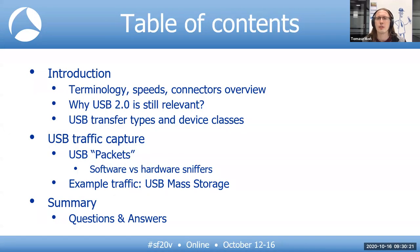The presentation starts with an introduction covering basic terminologies — bits, connectors, and why USB 2.0 is still relevant. I will also mention USB transfer types and device classes. Then I will show USB traffic capture options and outline the main difference between software and hardware sniffers. I picked USB Mass Storage as an example because USB memory sticks are well-known devices, the Mass Storage USB protocol layer is simple, and there is a Mass Storage dissector in Wireshark. At the end, there will be a short summary and Q&A session.